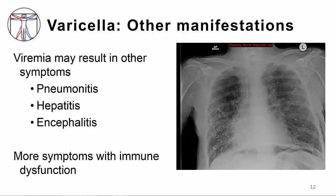During infection, patients are also viremic, and the virus travels to other organs in addition to the skin. Sometimes patients will present with pneumonia, hepatitis, or encephalitis — inflammation of the brain. This type of presentation is more common in patients with immune dysfunction. In this x-ray, you can see inflammation in all parts of the lung, which is varicella pneumonia.